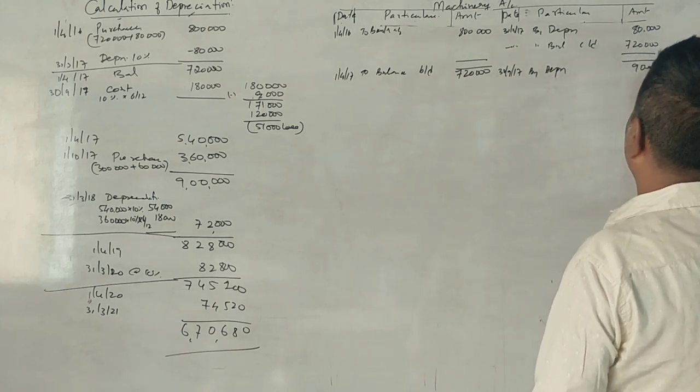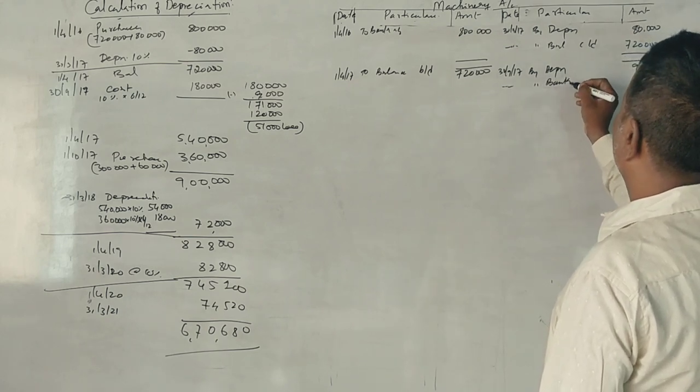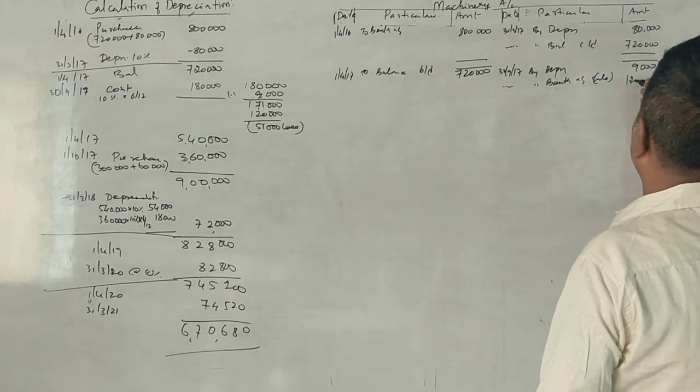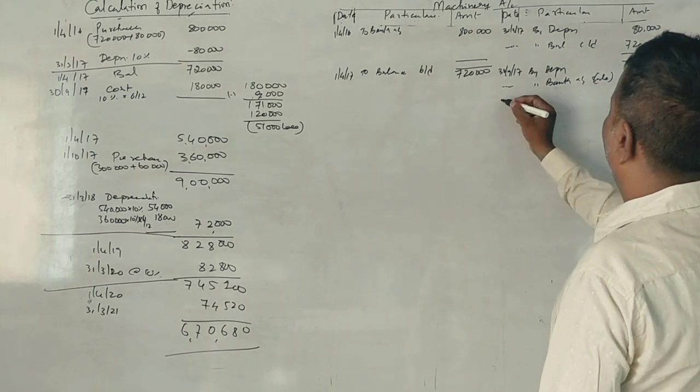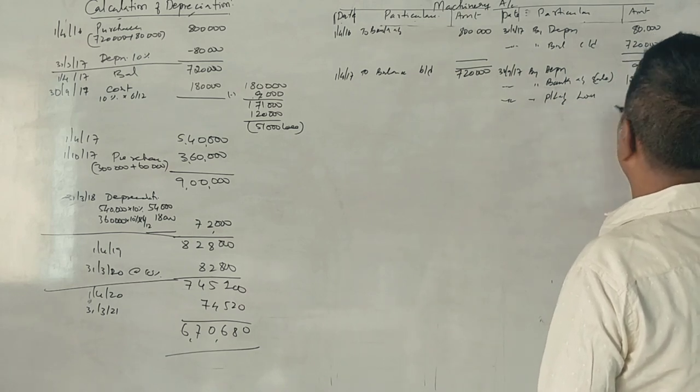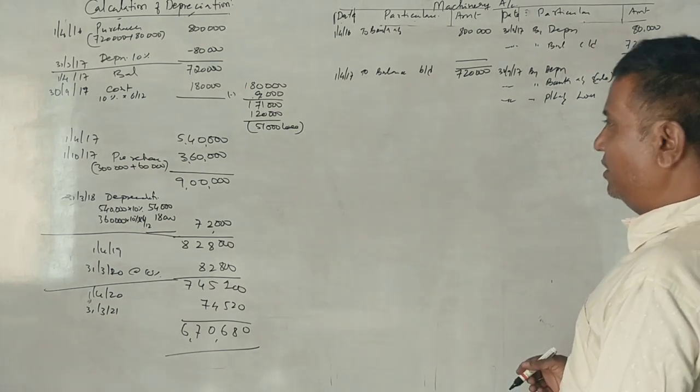To balance brought down $720,000. First, on 30th September 2017, by depreciation $9,000. Then by bank account, sale is $120,000. Profit and loss account loss $51,000.